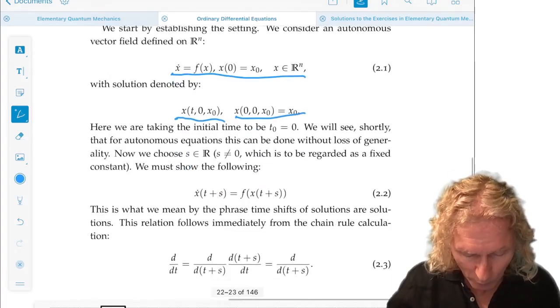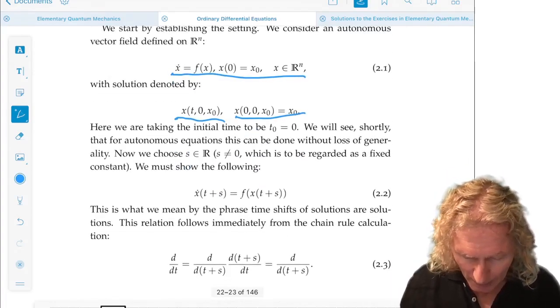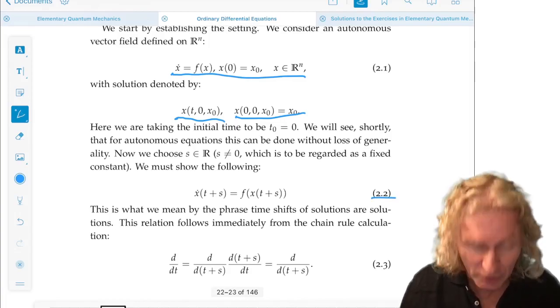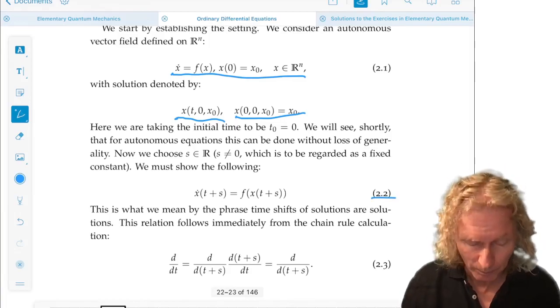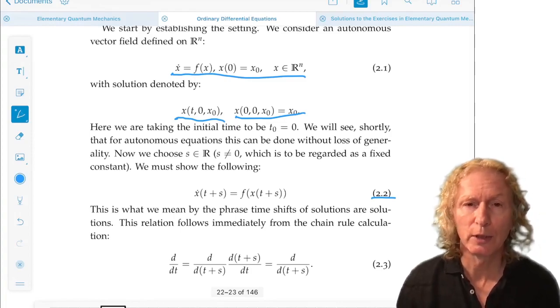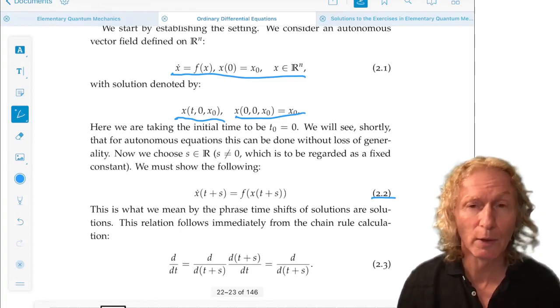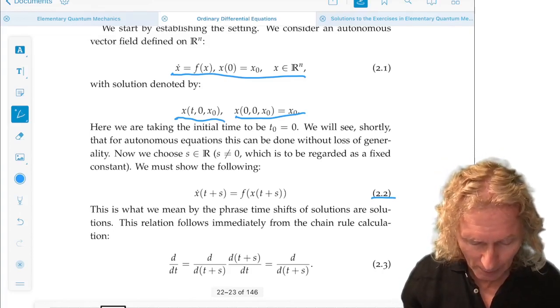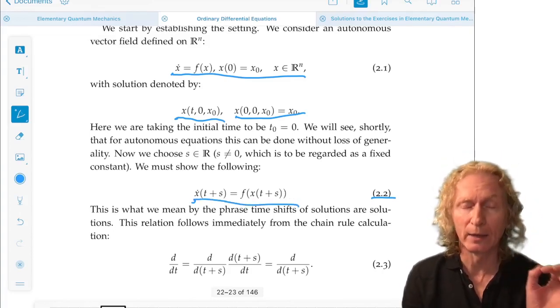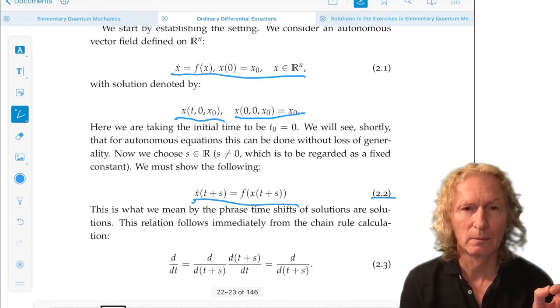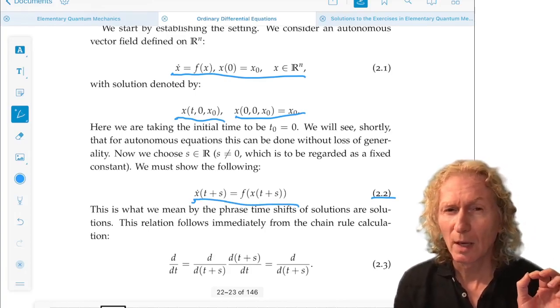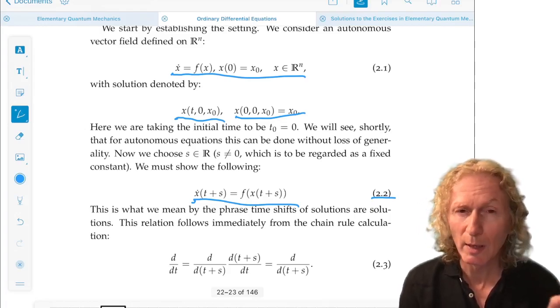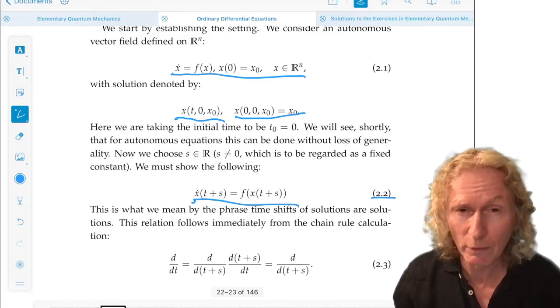All right, so what we want to prove is this relation 2.2. x dot, d by dt of the solution x at t plus s for any constant s that we're just shifting the argument in time, is equal to f of x of t plus s. That's not obviously true. We know x of t satisfies d by dt of x of t equals f of x of t.